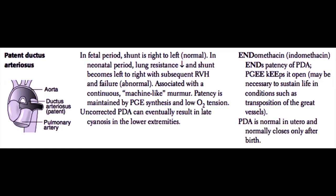Patent ductus arteriosus is very commonly seen. Remember that in the fetal period the shunt across the PDA is right-to-left. In the neonatal period, however, lung resistance drops because of breathing and the shunt becomes left-to-right. If the PDA stays open, the patient will develop right ventricular hypertrophy and right-sided heart failure, which is why large PDAs should be diagnosed early and treated. PDAs are associated with a continuous machine-like murmur. Patency of the PDA is maintained by prostaglandin E synthesis and low oxygen tension, and a PDA should be kept open in situations such as D-transposition of the great vessels, where the shunt helps keep the patient alive.